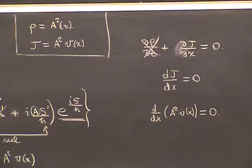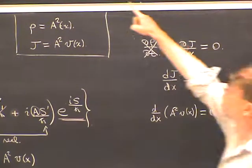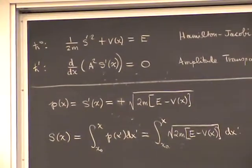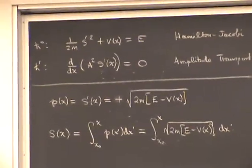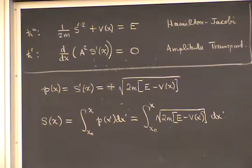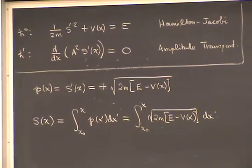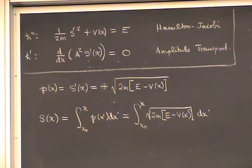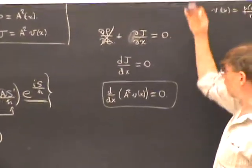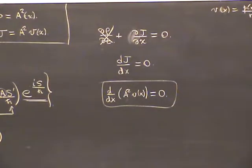So the meaning of the amplitude transport equation is conservation of probability — it's the continuity equation. This also gives an interpretation for the amplitude A: since d/dx(A²·v) = 0, the quantum probability density A² is proportional to 1/v(x), the reciprocal of the local velocity.